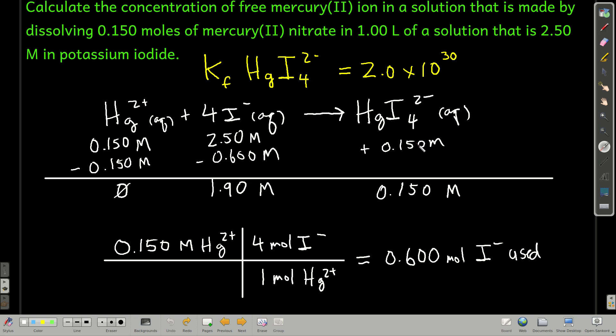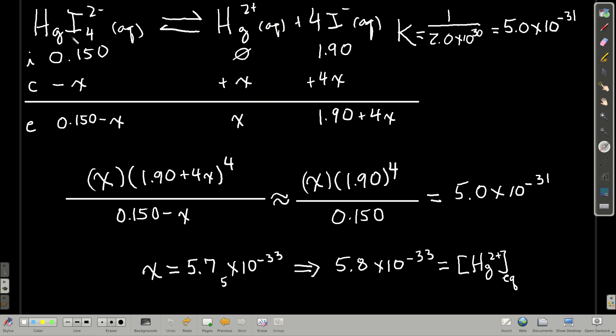Now what we're going to do is we're going to turn this around, let it unwind at equilibrium. So we just flip the equation around, and remember, when we reverse an equation, we invert the K. So 1 over the K gives this. The K for this is 5 times 10 to the minus 31st. Now we set up our ICE table.